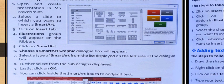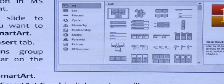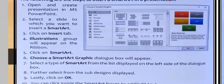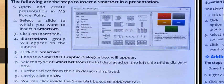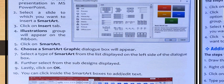Choose a SmartArt graphic dialogue box will appear. Here you can see that dialogue box. You can choose as per your choice and content. The dialogue box will appear. Select type of SmartArt from the list displayed on the left side of the dialogue box. Here you can see all list, process, cycle, hierarchy, so you need to choose from here.